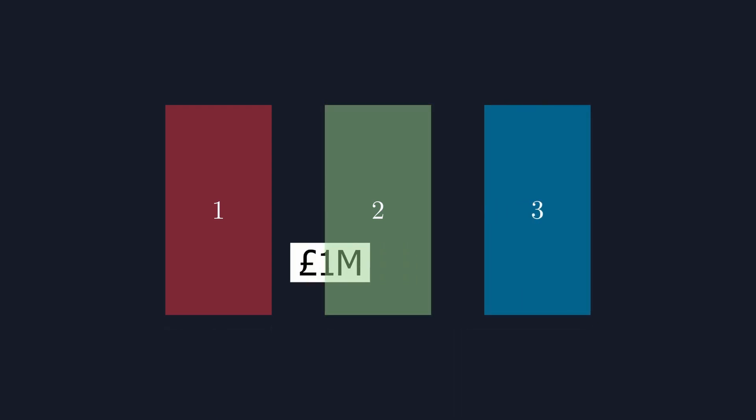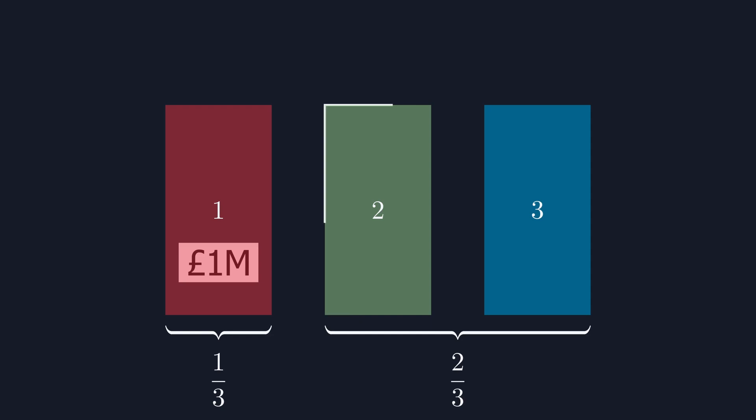The only time this fails is if we pick the correct door to begin with. In this case, though we were still likely to have picked incorrectly, the game show host can open either of the two doors, and switching will always give us the wrong door. Hence, sticking with our original door will be the right choice only one in three times.